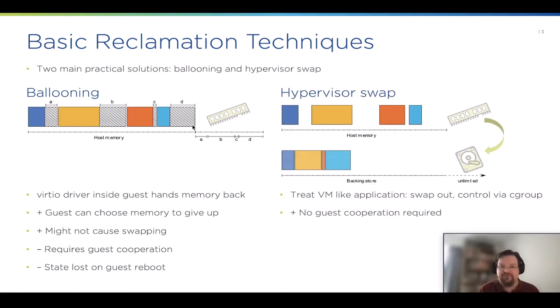The other option is to use hypervisor swap where you treat a VM basically like any other application. You swap out parts of it when you need more memory and you can control how much each one uses with cgroups. The big advantage is that no guest cooperation at all is required. When we first set out to build our solution, we thought the balloon driver sounds nice, but if it's not supported by every guest, we want something applicable everywhere. So let's go with hypervisor swap. Of course, hypervisor swap also has downsides, and the biggest is probably its performance, especially when hit by a problem called double swapping.